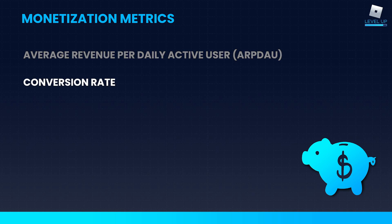Our next one is conversion rate — for all users in the game, what percentage of them have actually spent before? The reason I say this is the most important monetization metric is because a player who spends any amount in your game is much more likely to spend again in the future. So if your conversion rate is lower than your benchmark for competitors, you want to look at what offerings you have in the game, are they actually compelling and worth it, and do they make players feel powerful or rewarded for spending? If the answer is no, that's why players aren't spending.